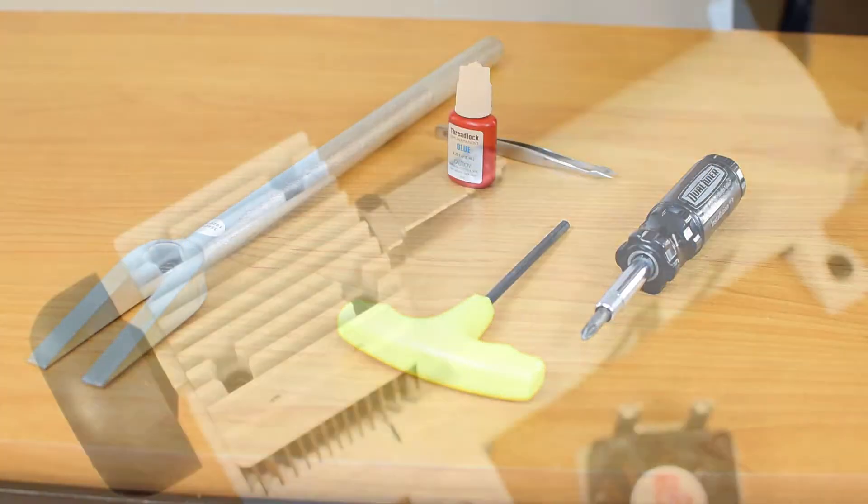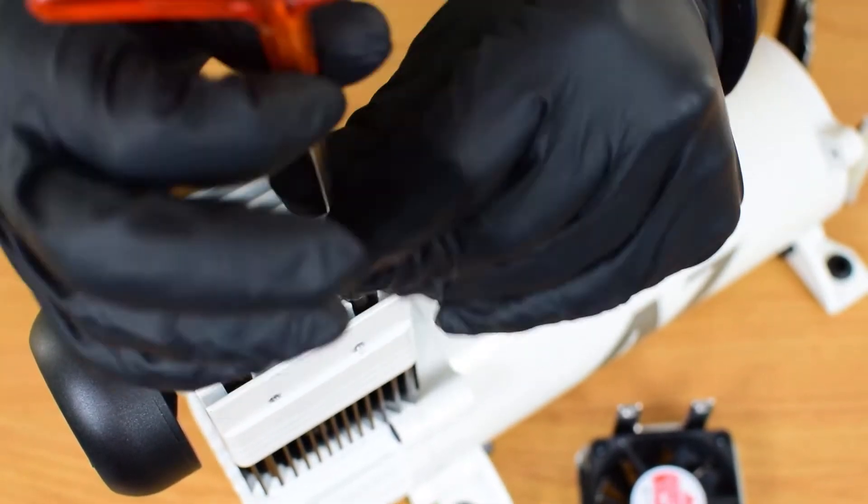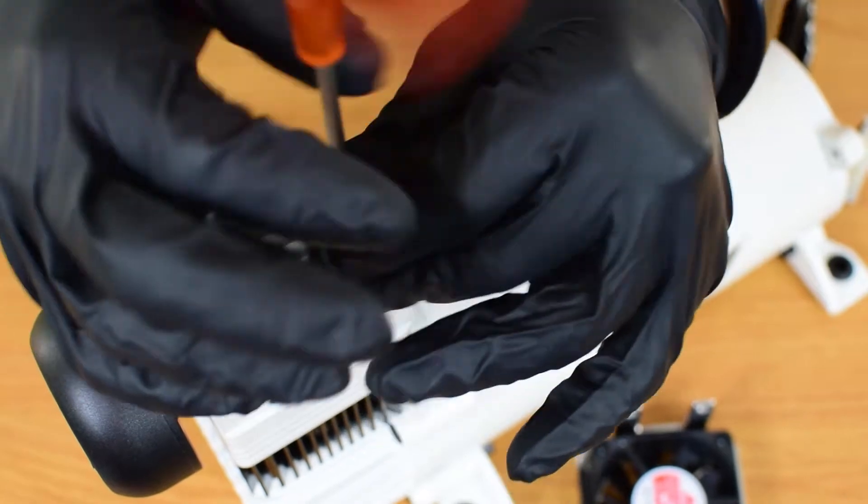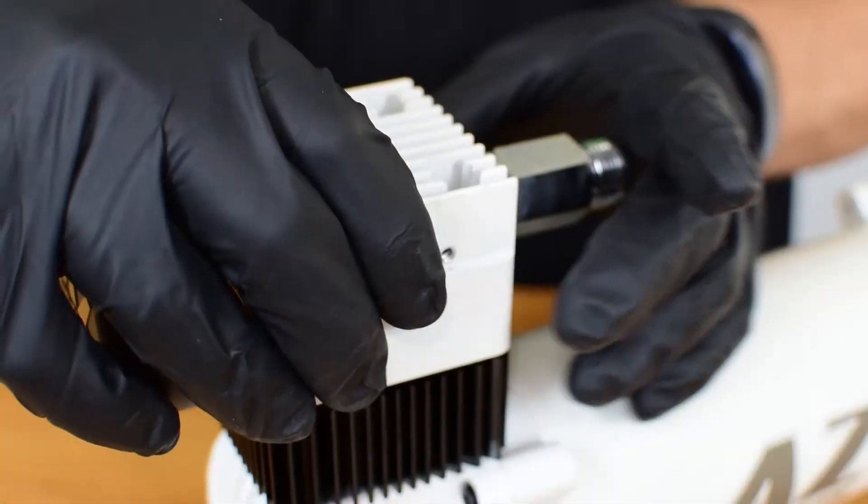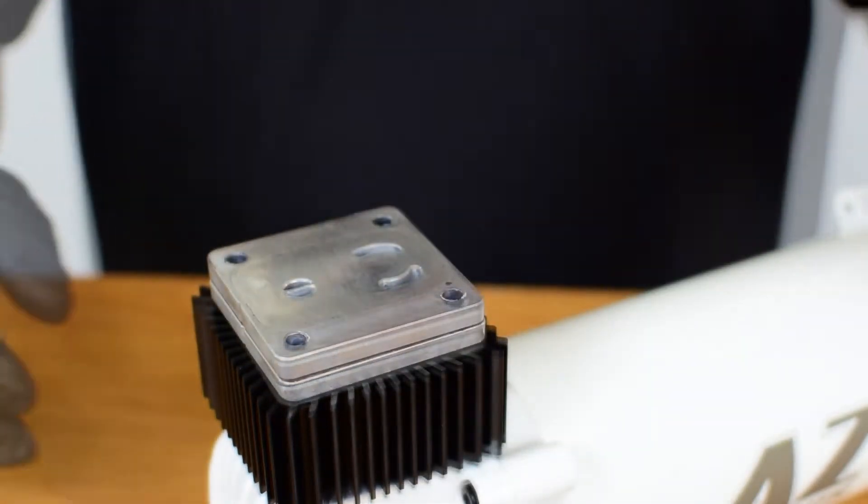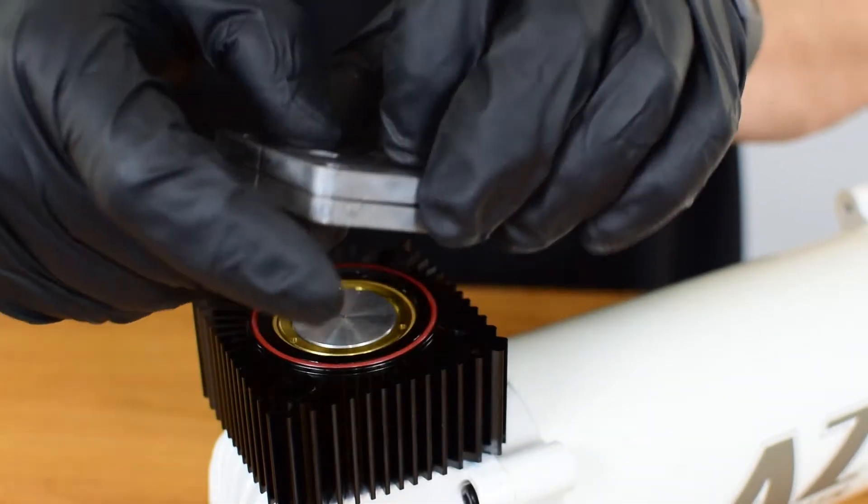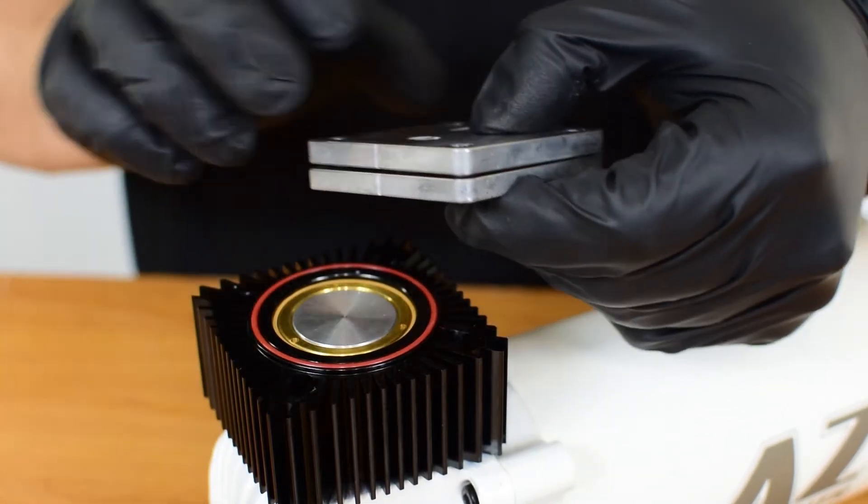Now grab your allen wrench and remove the four head bolts on the top of the compressor. These may be tight because they're held in with Loctite. Once all four are removed you can wiggle the head to remove it or you can tap it lightly with a rubber mallet if it's being difficult. Next remove the valve plates noting the notch and what direction it is facing faces the front of the compressor.